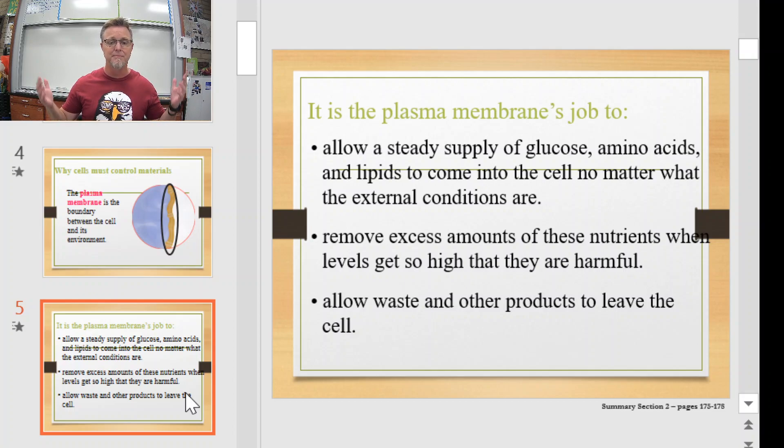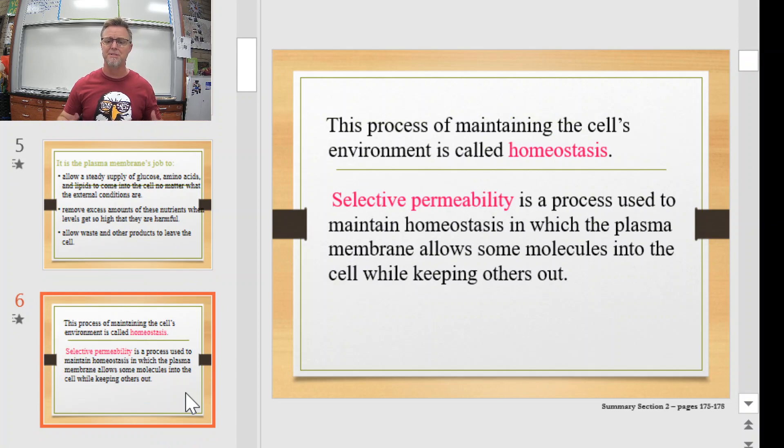Otherwise, the cell could literally explode. That's what maintaining homeostasis is all about. Maintaining balance, equilibrium, however you want to describe it, it's homeostasis. Because the cell's letting some things go in and not everything go in, we say what it's doing is showing selective permeability. This is that process of sorting things out that can go in. Some things are allowed in and other things aren't. That's how we maintain homeostasis.